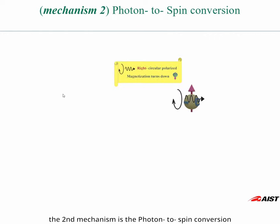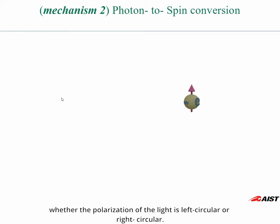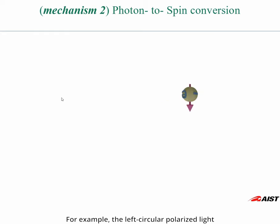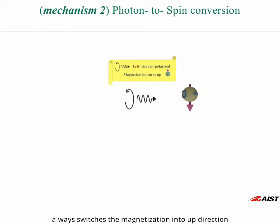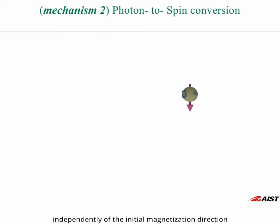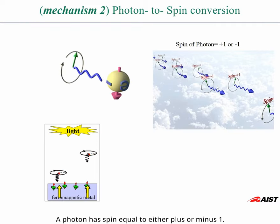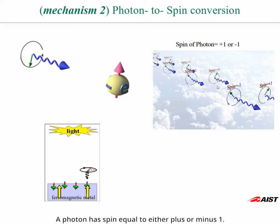The second mechanism is the photon-to-spin conversion. In this case, the magnetization is switched up or down according to whether the polarization of light is left circular or right circular. For example, the left circular polarized light always switches the magnetization into the up direction, and the right circular polarized light always switches the magnetization down, independently of the initial magnetization direction. A circular polarized light has a spin equal to either plus or minus one.